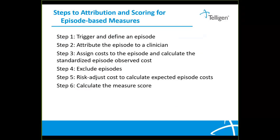The steps for attribution and scoring of the episode-based measures are: Step one, trigger and define an episode. Step two, attribute the episode to the clinician. Step three, assign the cost to the episode and calculate the standardized episode observed cost. Step four, exclude episodes — this removes unique groups of patients in cases where it may be impractical and unfair to compare the cost of caring for these patients to the cost of caring for the cohort at large. Step five, risk adjust the cost to calculate expected episode costs. Step six, calculate the measure score.